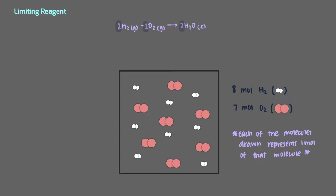The coefficients in the balanced chemical equation tell us that when 2 moles of hydrogen react with 1 mole of oxygen, they produce 2 moles of water.